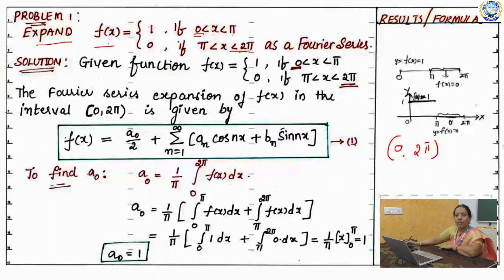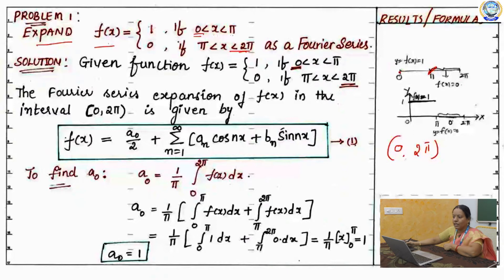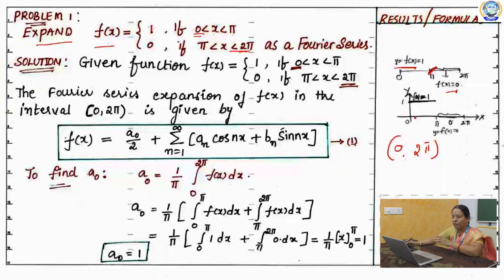What will be your discontinuous point here? Your function starts from 0 to pi. At pi, in between 0 to pi your function f of x is 1, and from pi to 2 pi your function f of x is 0. So the graph of your function will be shown like this.